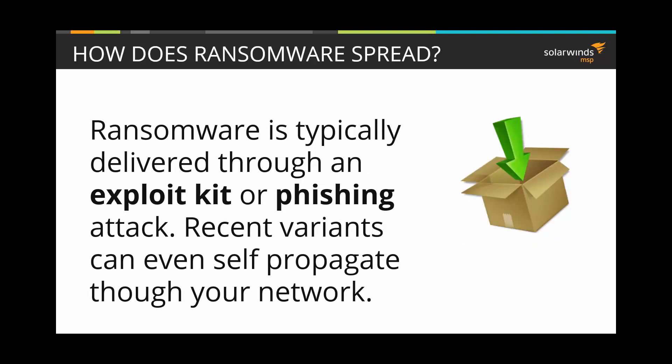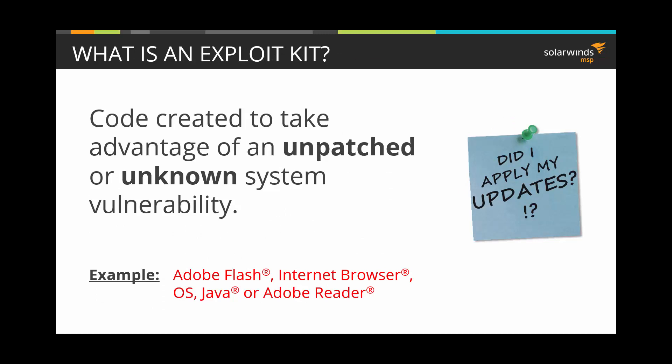How is ransomware spread? It's typically delivered through an exploit kit or a phishing attack. Once delivered, recent variants can even self-propagate throughout your network. What is an exploit kit? That's malicious code written specifically to take advantage of an unpatched or unknown system or application vulnerability.